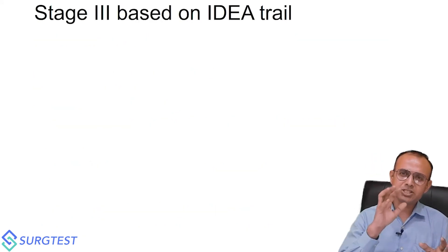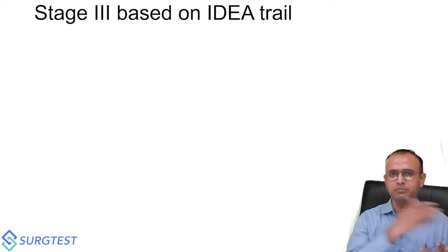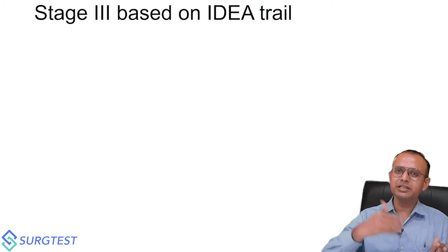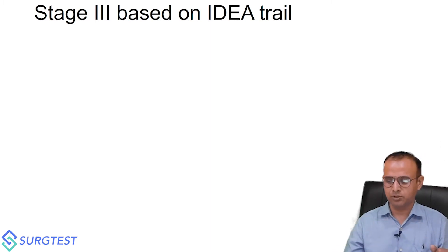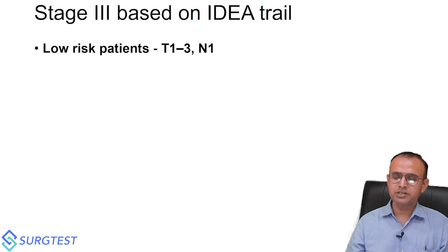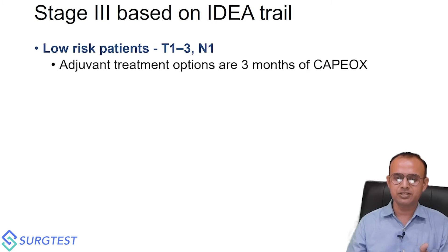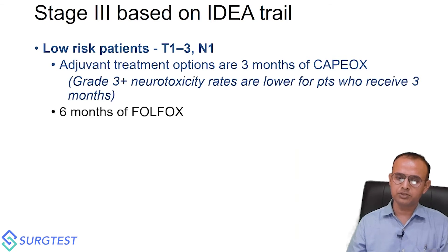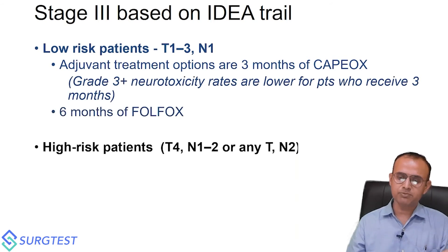In stage three, chemotherapy is clearly indicated. But should we give a full six months of chemotherapy or a shorter duration? The IDEA trial found that for low-risk stage three patients — T1/T2/T3 and N1 disease — the option of three months of CAPOX showed lower grade 3 neurotoxicity rates compared to six months of FOLFOX.